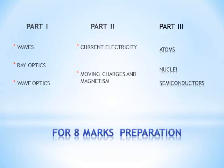Generally, the 1st question comes from waves or ray optics. The 2nd question comes from current electricity or moving charges and magnetism. The 3rd question comes from atoms or nuclei. The rest of the chapters — wave optics and semiconductors — will be prepared for 4 marks, and are very helpful if 8 marks come from those chapters.